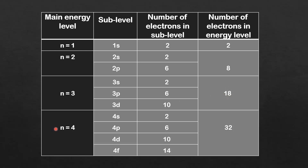Next is the N equals 4 energy level. It has a 4s, a 4p, a 4d, and a 4f sublevel. The 4s sublevel can hold 2 electrons, the 4p sublevel can hold 6, the 4d sublevel can hold 10, and the 4f sublevel can hold 14 electrons, making a total of 32 electrons in the N equals 4 energy level.